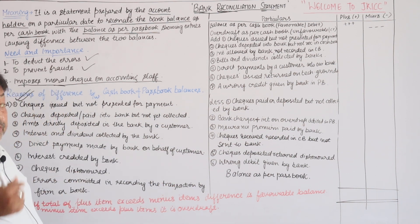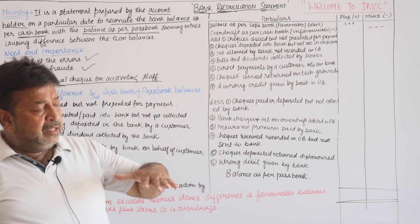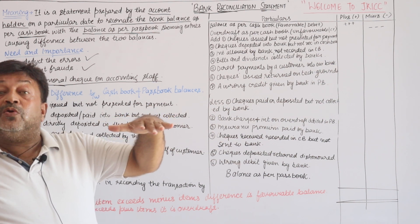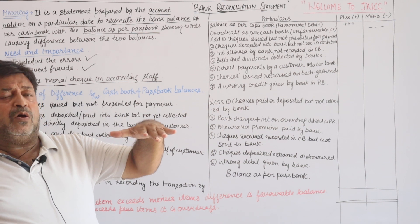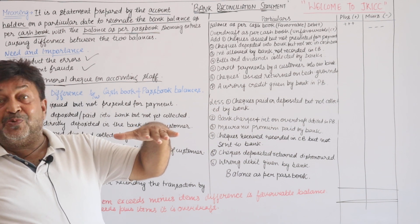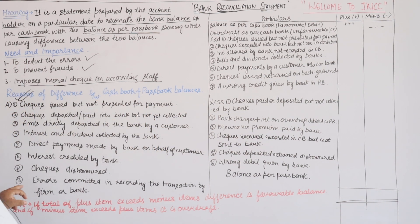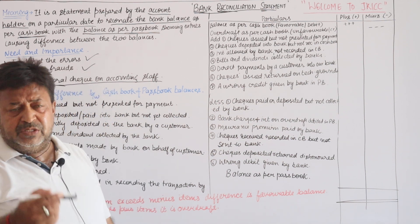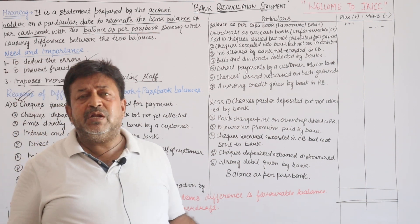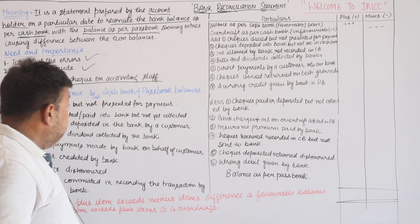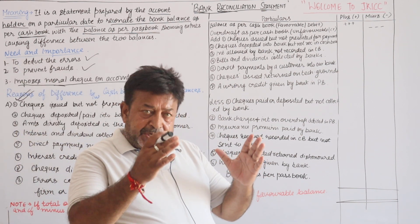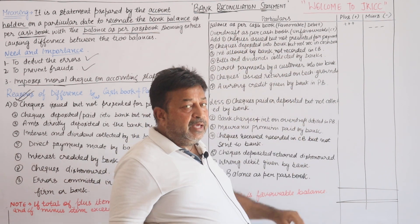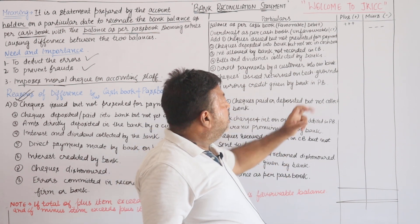We also give standing instructions to the bank to collect dividends and bills of different types — the bank collects them and the balance increases in pass book, but we haven't entered it in the cash book. Fifth reason: checks dishonored. I received a check from a customer, deposited it in the bank, and added my cash book balance. But the check was dishonored — maybe insufficient funds or some technical ground — so the bank reduced the balance, causing disagreement.